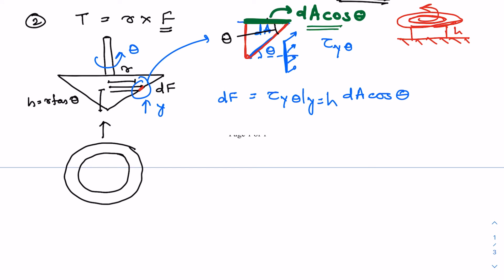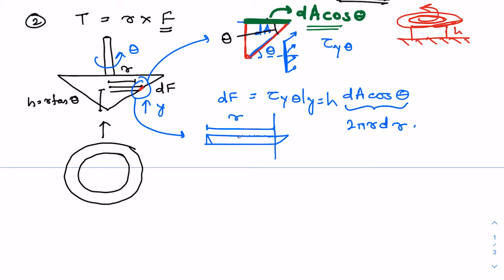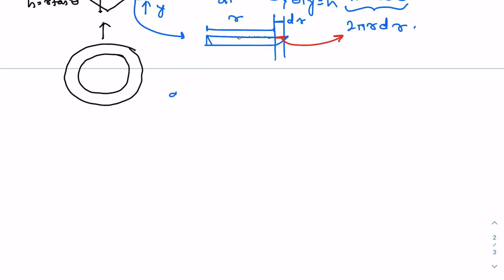Looking closely, dA·cos(theta) is nothing but 2π·r·dr — this is the horizontal strip at a distance r from the center with thickness dr. Substituting, the small force dF = tau_yθ (at y = h) × 2π·r·dr.